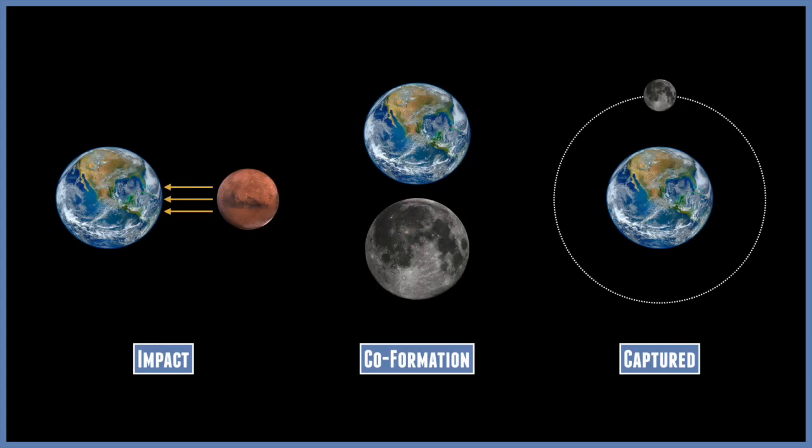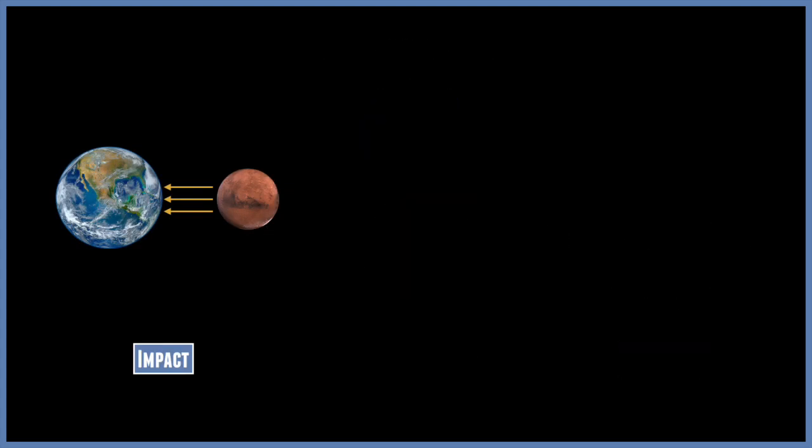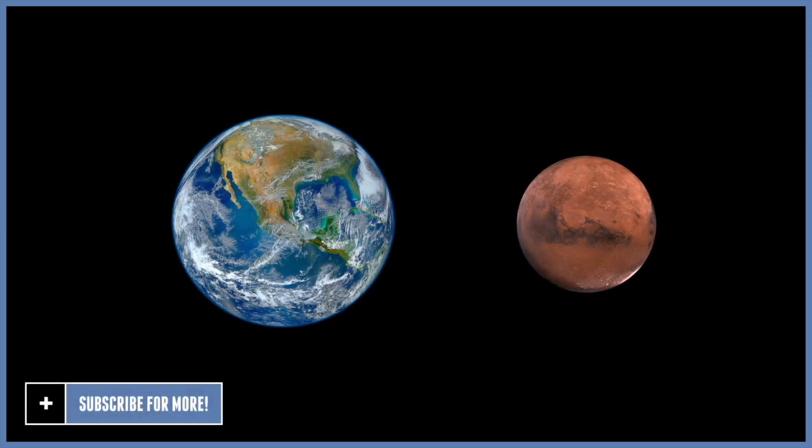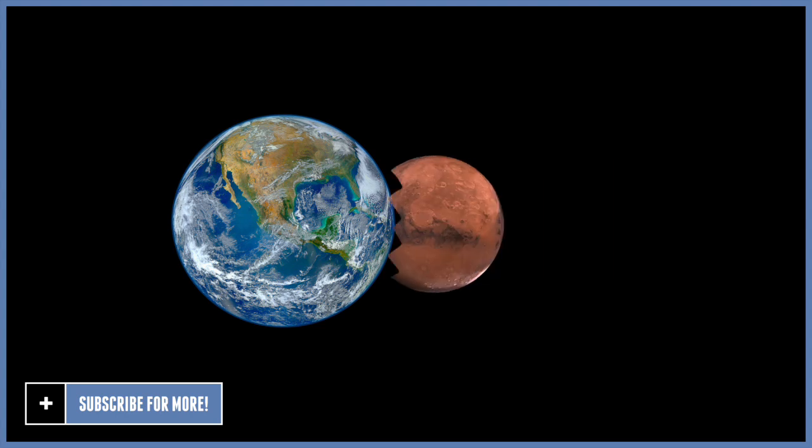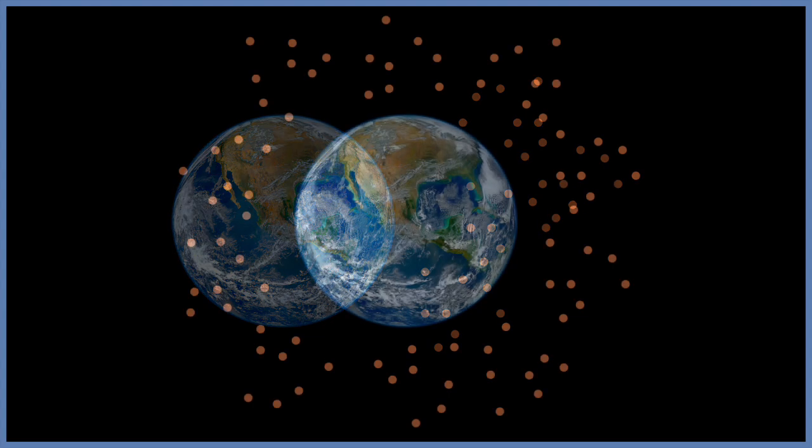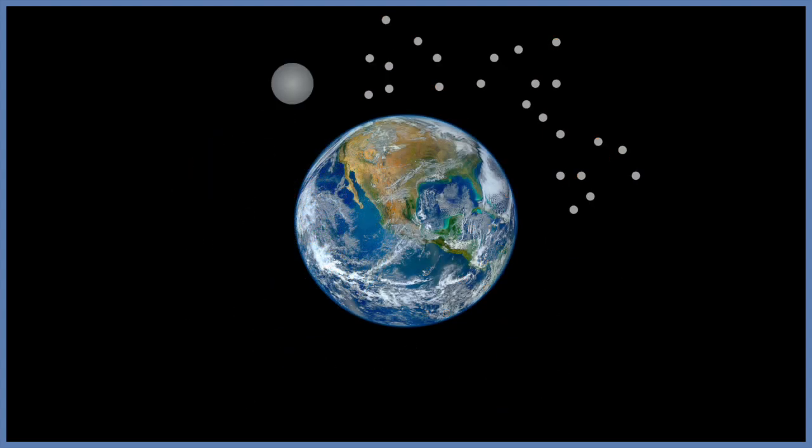So let's start off with the giant impact. This is basically that an object crashed into Earth a long time ago, and this created the moon. This object was known as Theia, and it was a Mars-sized object that collided with Earth. This threw chunks of debris out into space, and eventually gravitationally bound together, creating the moon.